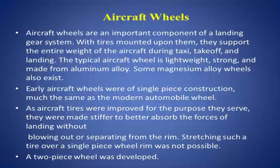During the old days, aircraft wheels were of single-piece construction, like we have in modern automobile wheels. But as time progressed, aircraft tyres were improved and made stiffer so that they could absorb the forces of landing without blowing out or separating from the rim. With improved tyres, a single-piece wheel rim was not possible because stretching the tyre onto it would have been very difficult. So, with these improved tyres, a two-piece wheel was developed.